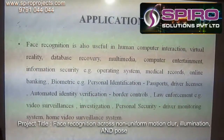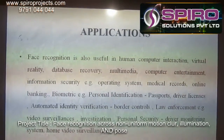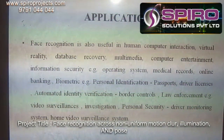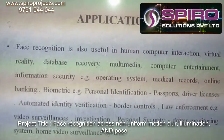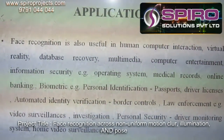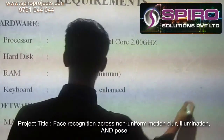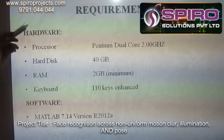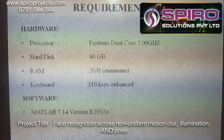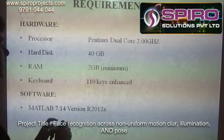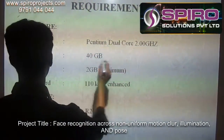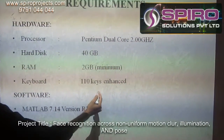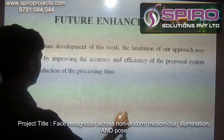There are a wide variety of applications — everywhere we require an authenticated person to use a system, right from passports to driver's licenses and so on. The hardware requirements for this project include a Pentium dual-core processor, a 40 GB hard disk, 2 GB RAM, and a standard QWERTY keyboard.